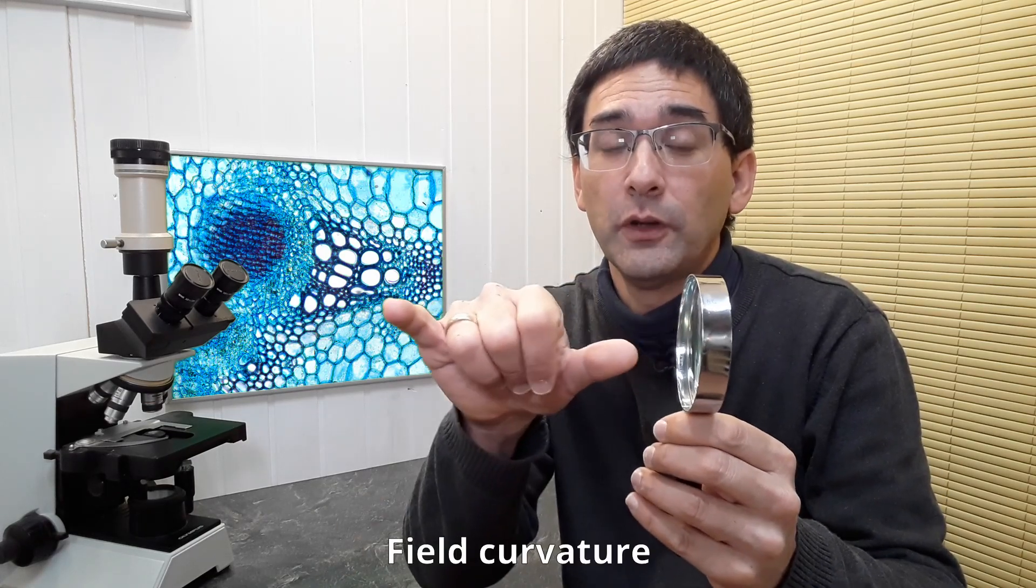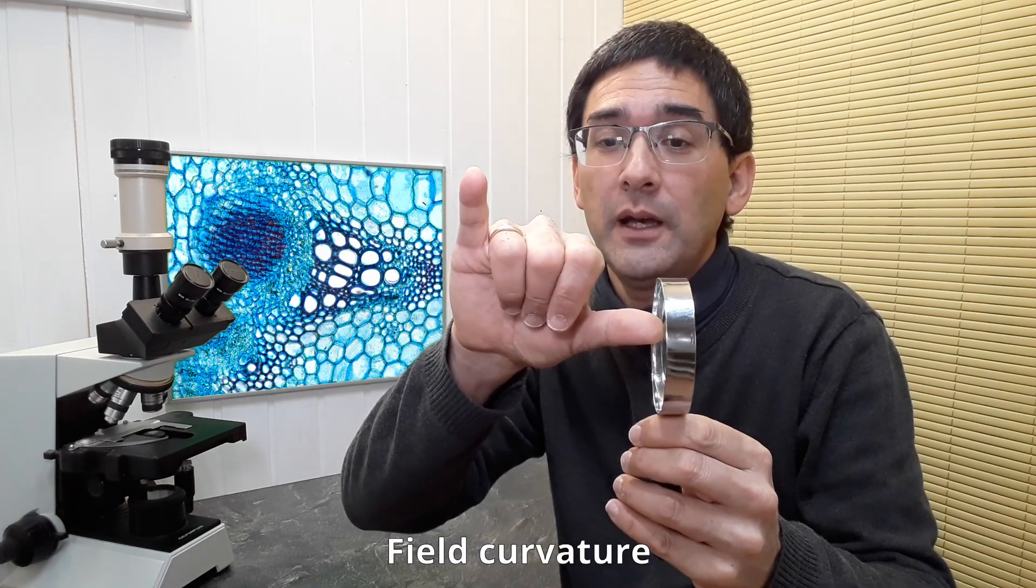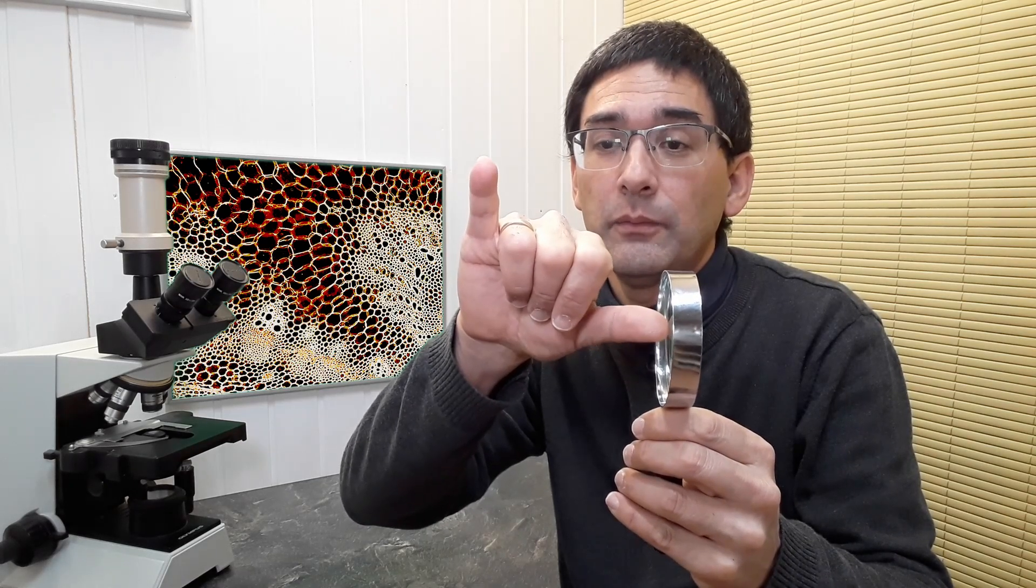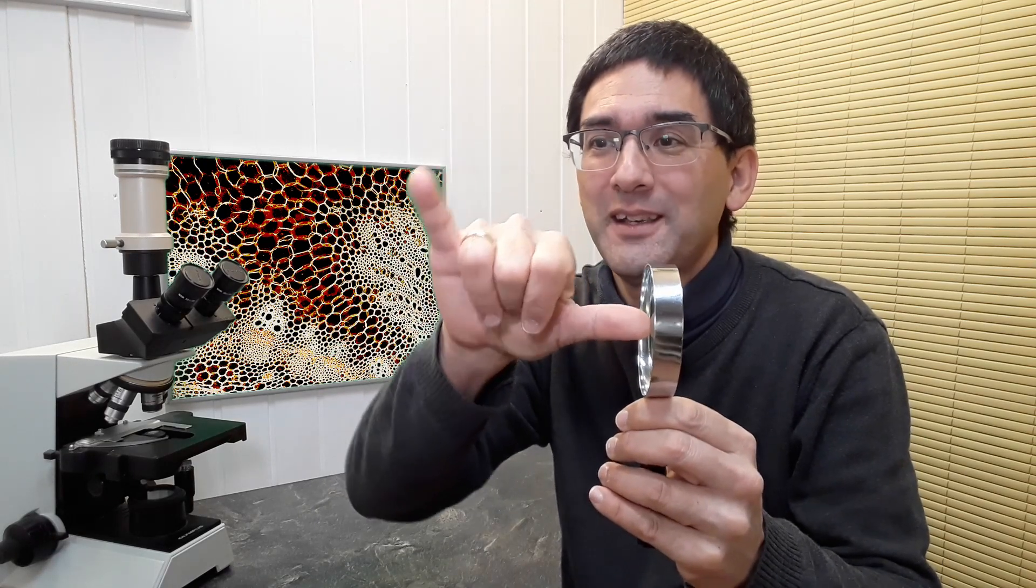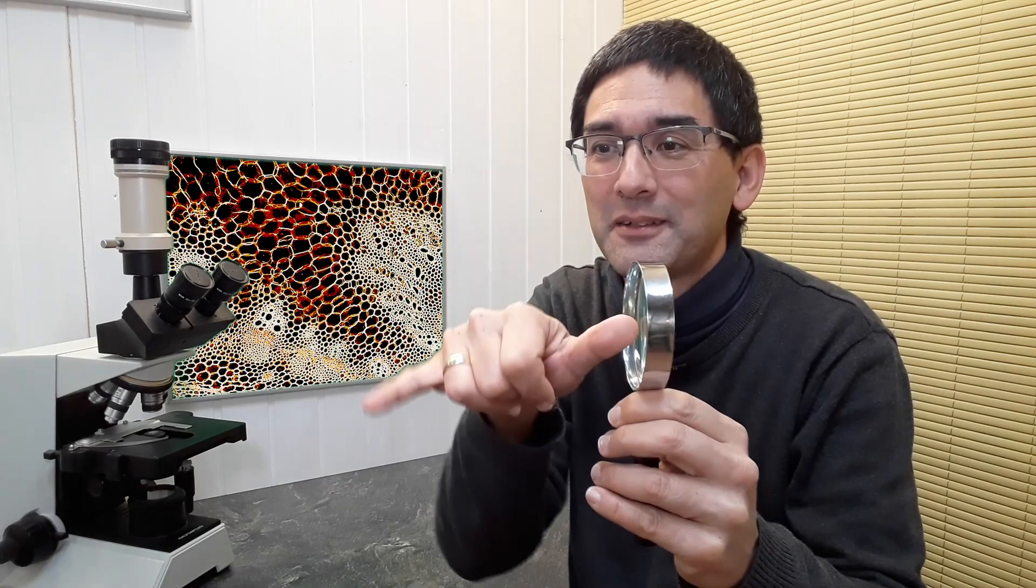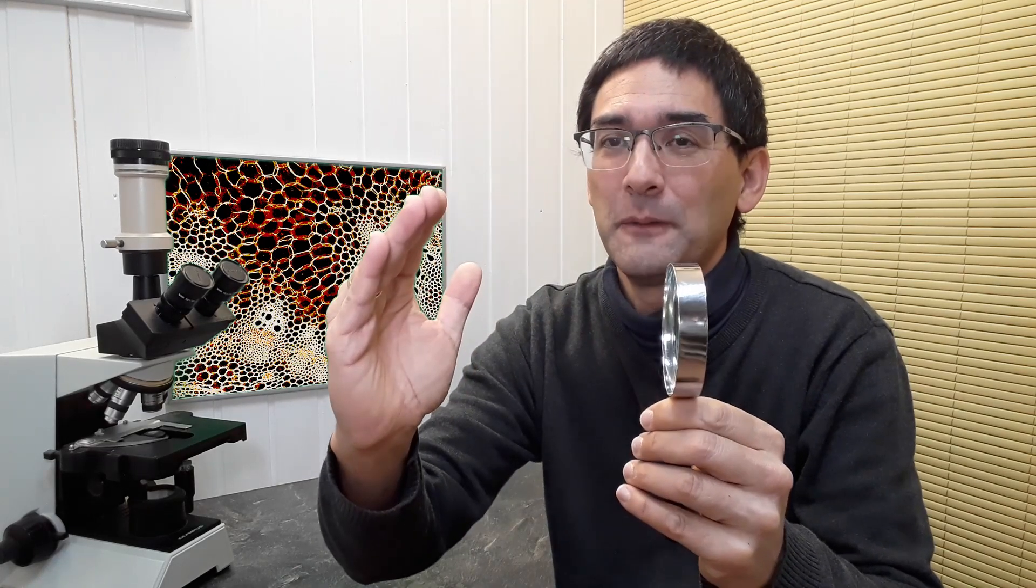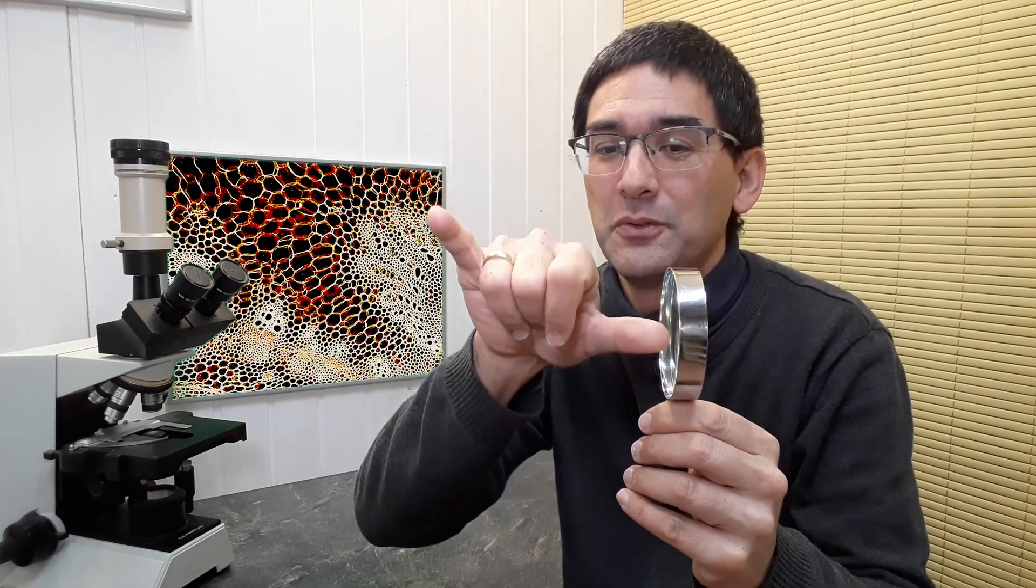And then the third is the following issue, so-called field curvature. What you have to understand is that there's a certain focal distance, but this focal distance is not a flat plane but actually is bent. It's not flat but also curved because you have to always take the same distance from the lens.